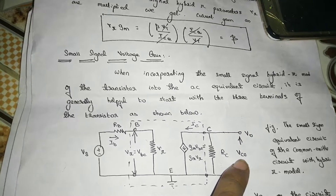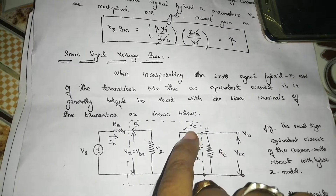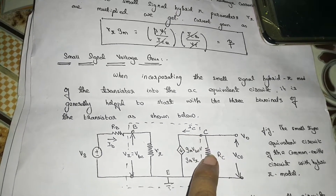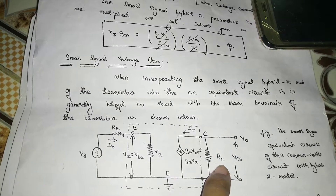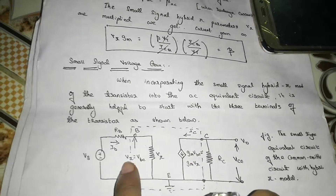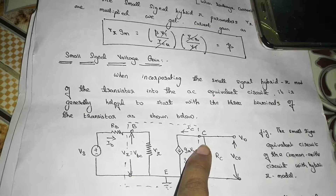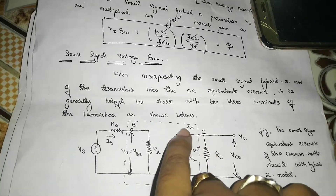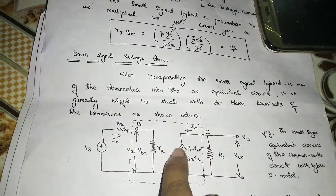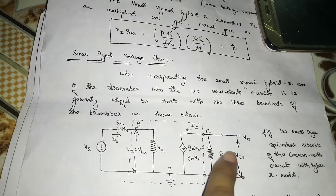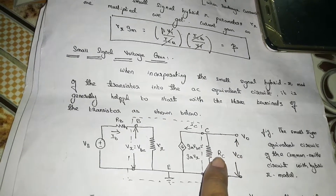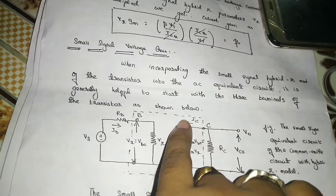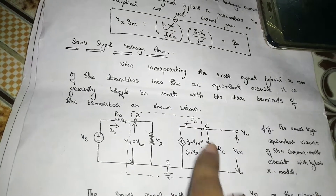V0 is equal to Vc. V is equal to I into R. What is I? IC. What is R? RC. So, V0 is equal to IC into RC. In the transistor, input and output are in opposite directions. So, V0 is equal to VCE. VCE is equal to minus IC into RC.